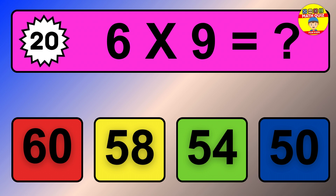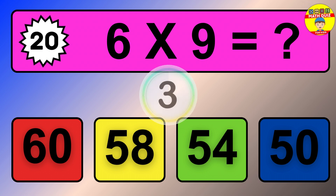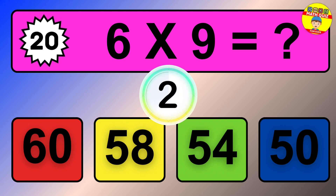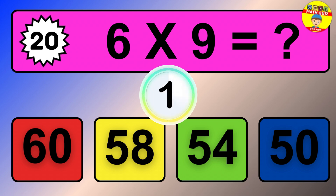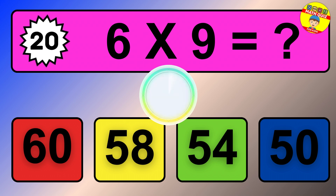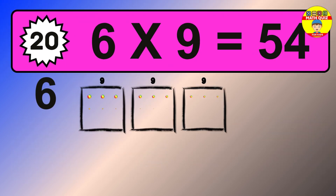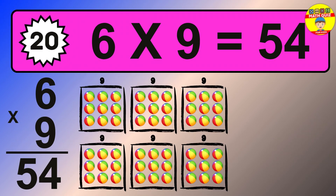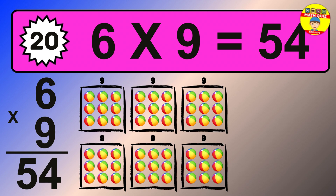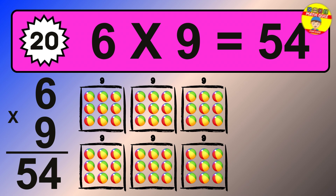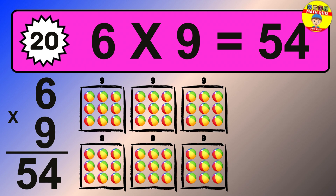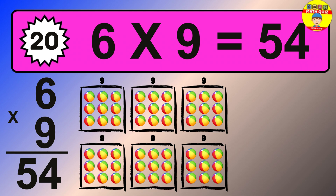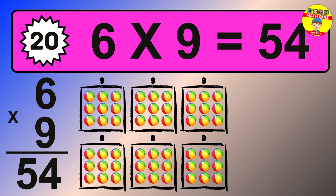Question 20. 6 times 9 equals what? The answer is 6 times 9 is 54. To calculate, we have 6 groups with 9 balls each one. So how many balls do we have? 54 balls.